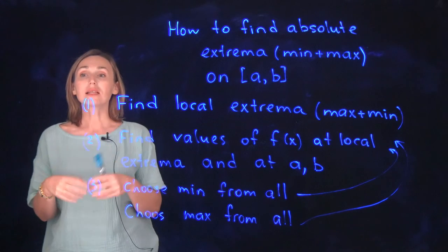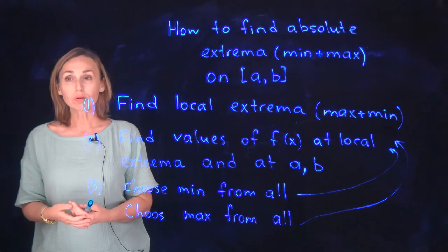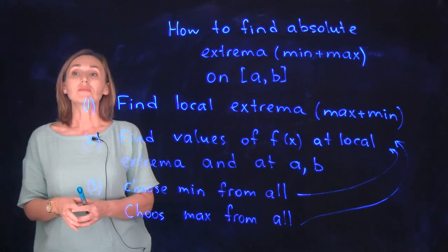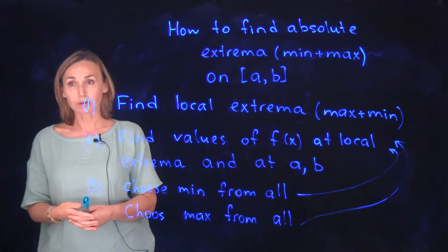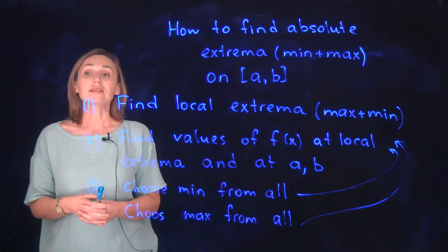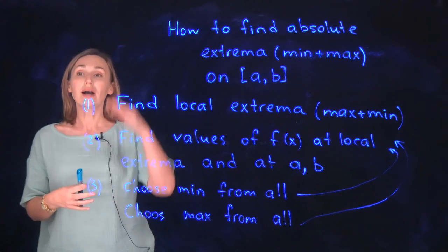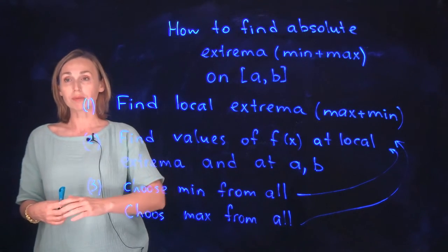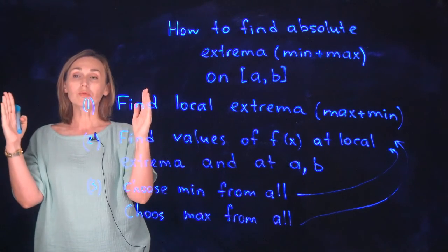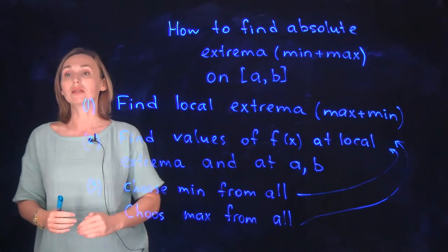Absolute means it's going to be minimum out of all minimum points, and maximum out of all maximum points if you have local maximum. On the graph it means highest point for the maximum and lowest point for the minimum. So in the given interval you need to find the highest point and the lowest point.